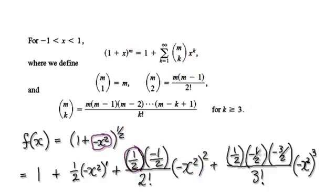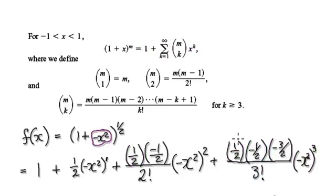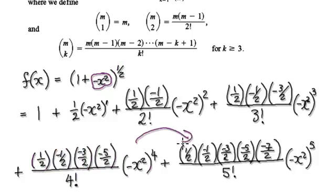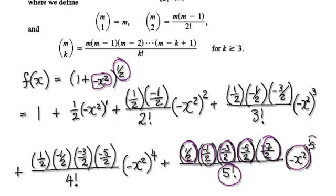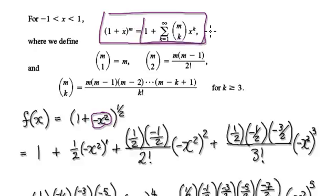The next term is one half, times (one half minus one), times (one half minus two), over three factorial, times x cubed. Then: one half times (one half minus one) times (one half minus two) times (one half minus three) over four factorial, times x to the fourth. And so on — you're just blindly following the binomial series formula each time.